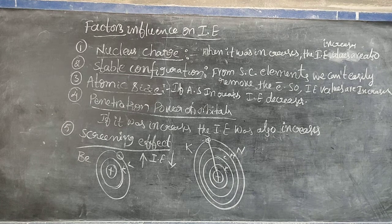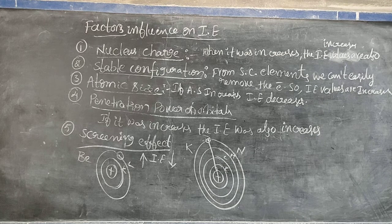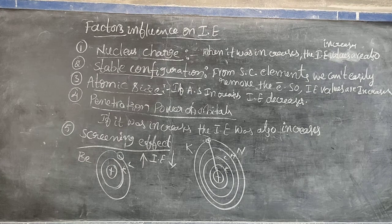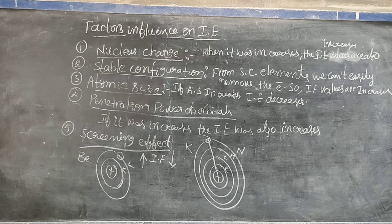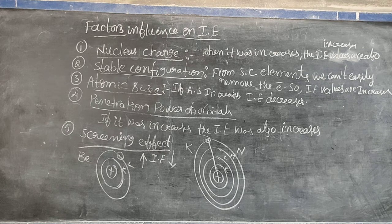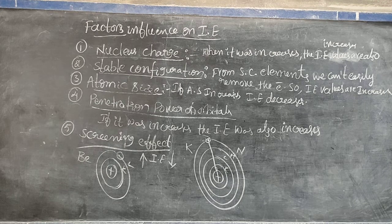In summary, the five factors influencing ionization energy are: nuclear charge, stable configuration, atomic size, penetration power, and screening effect. Atomic size and screening effect behave the same way — when these increase, IE decreases. The other three (nuclear charge, stable configuration, penetration power) — when these increase, IE also increases. This is a very important four-mark question. Make sure to write it in your learning notebook.